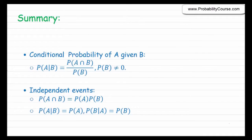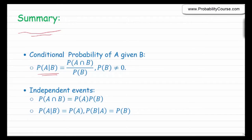In this video, I would like to continue our discussion about independent events. Let's have a quick summary of what we saw last time. We defined conditional probability of A given B as probability of A and B divided by probability of B, and that was our notation on conditional probability. We can write this as long as probability of B is non-zero. We say that A and B are independent if probability of A and B is equal to probability of A times probability of B.